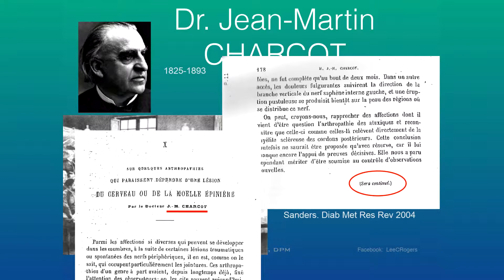Charcot foot is named after Jean-Martin Charcot, who also has other diseases bearing his eponym, which causes confusion for patients looking things up on the internet. In the first paper he wrote in 1868, at the very end he wrote 'sera continué' — to be continued — because he said we still have a lot to learn about this condition. It's almost 160 years later, and we still have a lot to learn about Charcot foot.